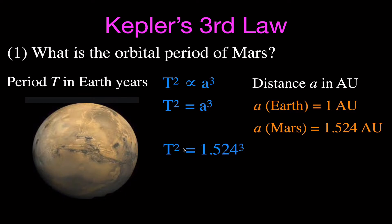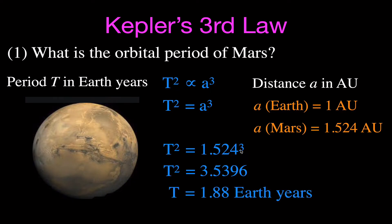T squared equals 1.524 cubed, which gives T squared equals 3.5396. Taking the square root of both sides, we get that the orbital period of Mars is 1.88 Earth years. This means it takes 687 Earth days for Mars to go once around the Sun. That is example number one.